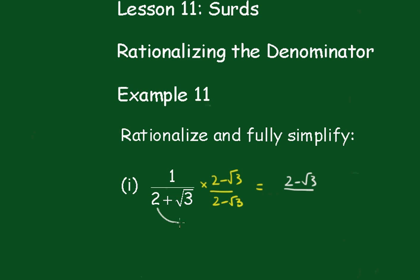Now the top would just be 2 minus root 3, and the bottom is 2 times 2 is 4, and root 3 by root 3 is 3. So the answer is just 2 minus root 3.